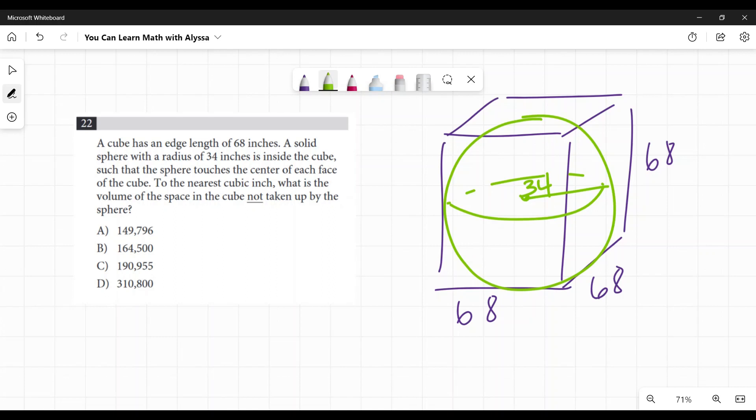To the nearest cubic inch, what is the volume of space in the cube not taken up by the sphere? So we're talking about these spaces around it, essentially, maybe up in this corner too, and down in this corner—all these little corner spaces.